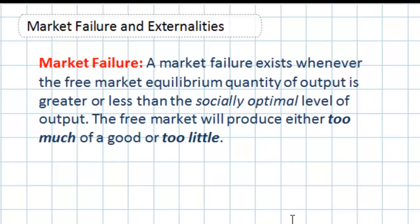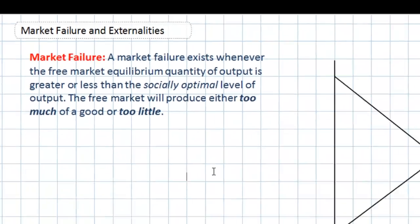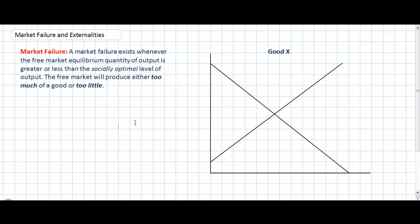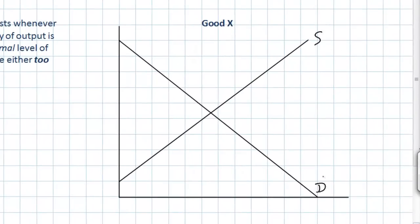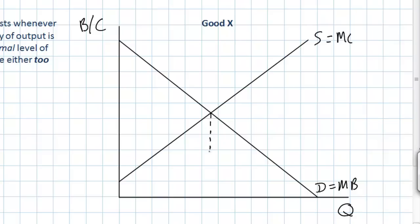This raises the question: what exactly is meant by socially optimal or efficient? How do we know if the level of output in a particular market is the right amount? Well, this requires us to examine the supply and demand for a particular good with a slightly different perspective. Rather than looking at a demand and supply diagram purely as supply and demand, we must begin to examine supply and demand in the context of marginal costs and marginal benefits of the producers and consumers of the good. The vertical axis, usually labeled P, represents the benefits and costs of consumers in that market and of society as a whole, while the horizontal axis still measures the quantity of output and we still identify the equilibrium quantity and equilibrium price.